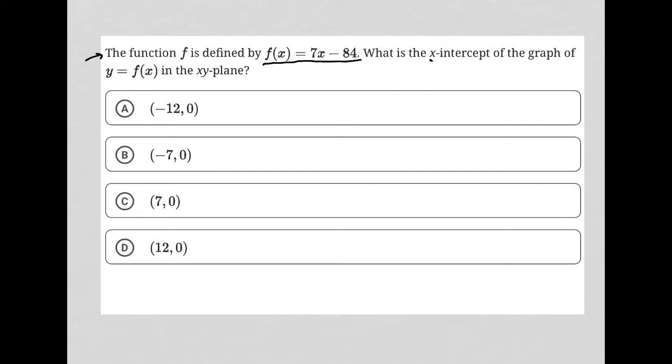The x-intercept is always found where y is equal to 0. Since we have this written in function form, we know that y equals f(x),